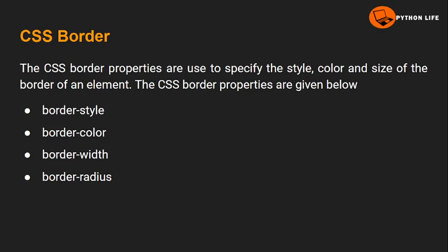Here we are going to discuss different types of CSS border properties. The first property is border-style, the second is border-color, the third is border-width, and the last one is border-radius. So here we are going to discuss these four different properties.